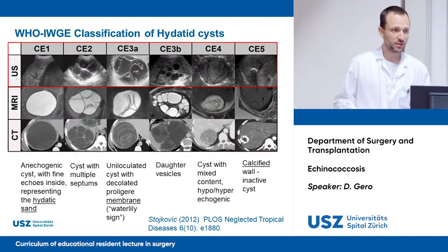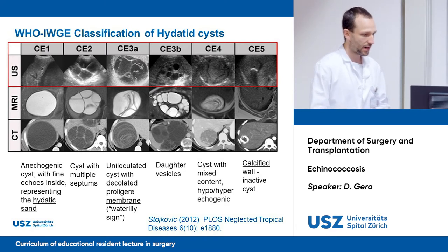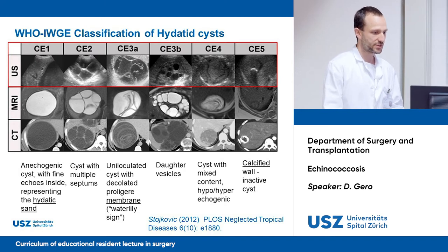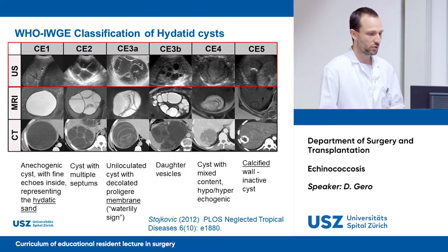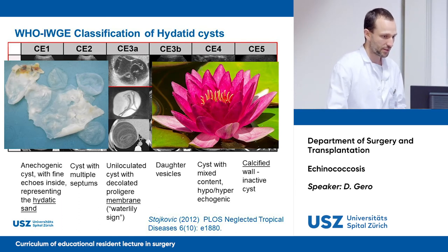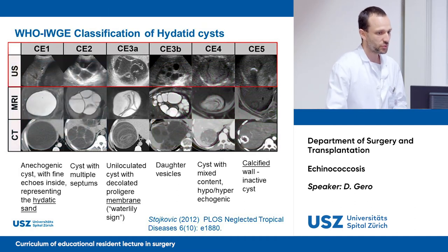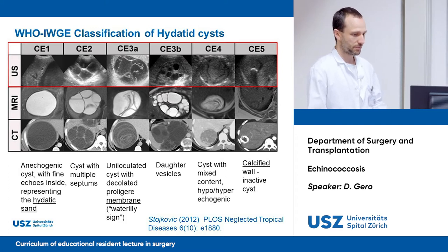This image shows the WHO classification of hydatid cysts with five stages. Stage 1 shows an anechoic cyst with fine echoes representing hydatid sand. Stage 2 has cysts with multiple septae. Stage 3A shows a uniloculated cyst with a detached so-called proligerous membrane — radiologists with imagination have named this the water lily sign. Stage 3B has daughter vesicles. Stages 4 and 5 are inactive cysts with calcifications and mixed hypo- and hyperechoic content.